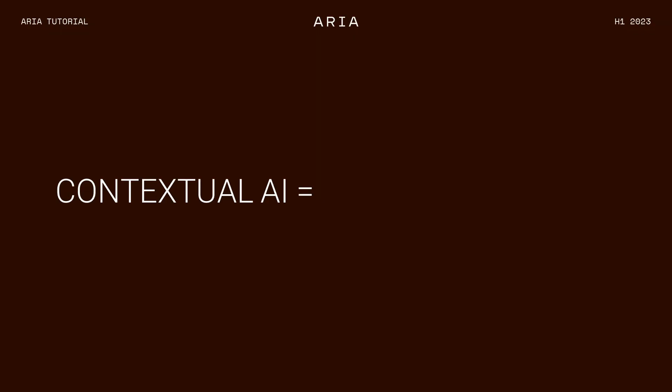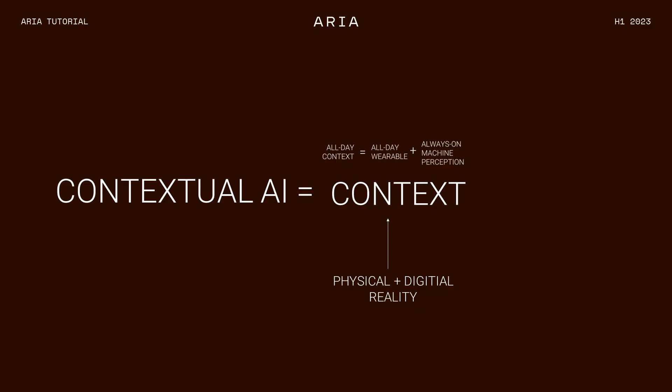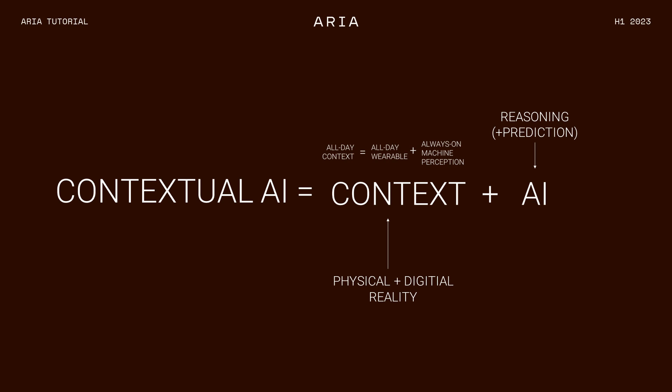What we call contextualized AI is the thing that really needs to happen, and it can only happen if you have two things: context of you, which comes from all-day wearable devices, and the ability to have machine perception take the data from those devices and turn them into signals that AI can actually work with. AI cannot consume an entire day's worth of egocentric imagery — it's just too big. But when you put those two things together, you get contextualized AI, and it's a very new class of problem to solve. You have to solve the problems with wearable devices, machine perception, and you have to put it together with AI. These fields are not separate — they're going to be combined.